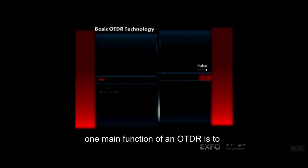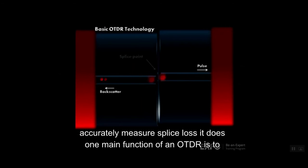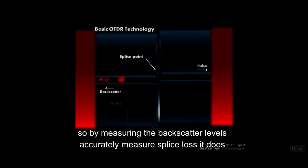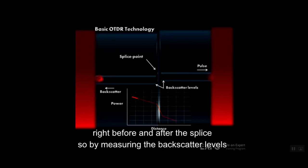One main function of an OTDR is to accurately measure splice loss. It does so by measuring the backscatter levels right before and after the splice.